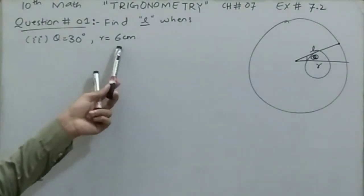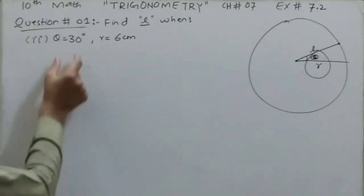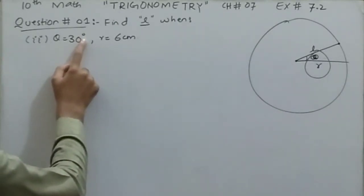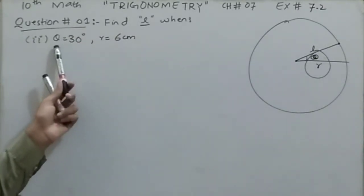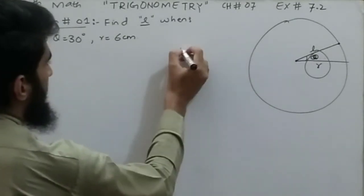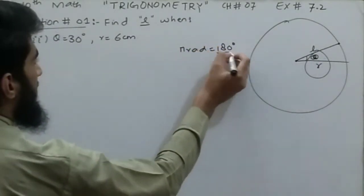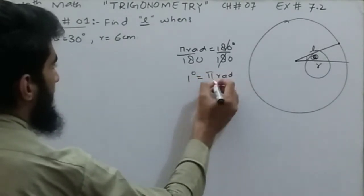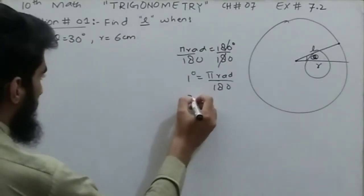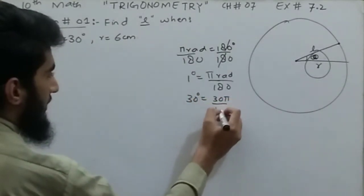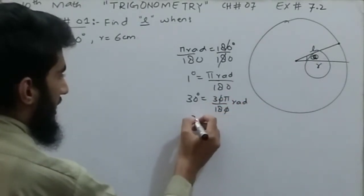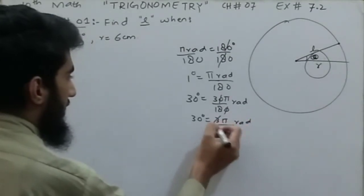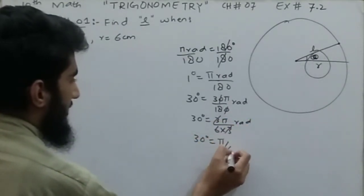Part number two: theta is equal to 30 degrees and r is equal to 6 centimeters — find the value of l. Remember, theta must be in radians according to the circular system. The degree system is the sexagesimal system, so we need to convert. Since π radian equals 180 degrees, dividing both sides by 180 gives 1 degree = π/180 radian. Multiplying both sides by 30: 30 degrees = 30π/180 = π/6 radian.